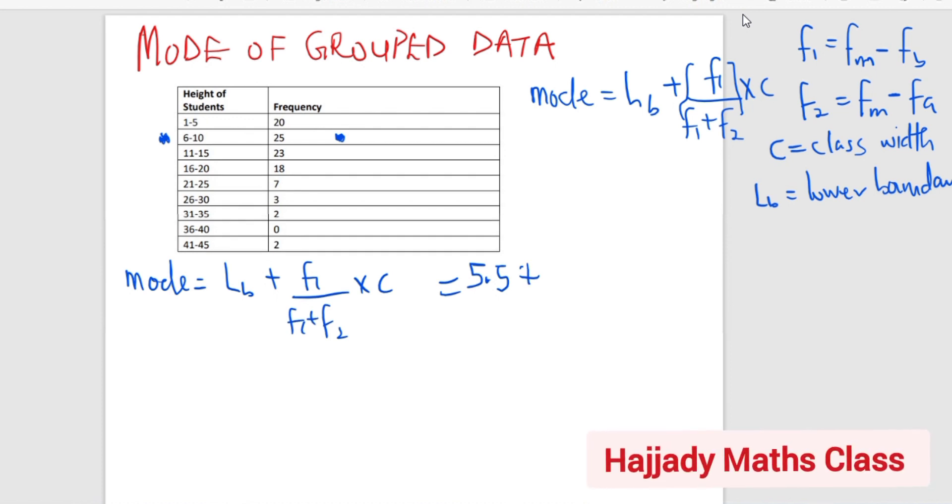Our F1, don't forget, is the frequency of the modal class minus the frequency before it. And the frequency of our modal class here is 25. So let me put that in bracket for easy computation minus the frequency before it, which is 20. That is my F1.